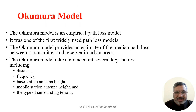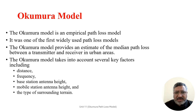The Okumura model is an empirical path loss model that was developed by Okumura et al. in the 1960s in Japan. It was one of the first widely used path loss models and is still referenced today, although it has been superseded by many advanced models. The Okumura model provides an estimation of the median path loss between the transmitter and receiver, especially in urban areas.